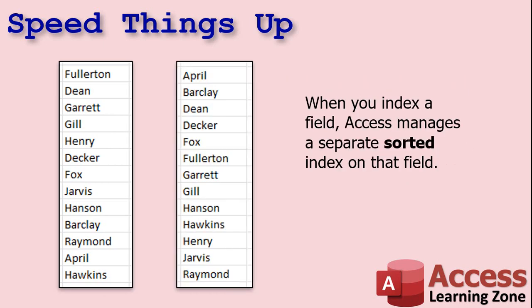When you index a field, Access creates a separate hidden index table that it manages. It's sorted by that field, and this greatly speeds up searches and sorts. Access can use a faster algorithm to quickly find a value in that sorted index. I've been thinking about doing some classes on computer science — the actual math and logic behind this stuff — so if you're interested, post a comment below. I took that stuff in college back in the 90s, and it was pretty fascinating. Different algorithms for sorting and so on.